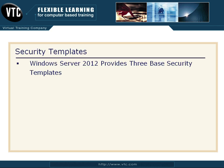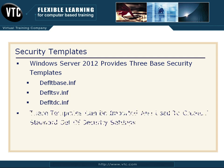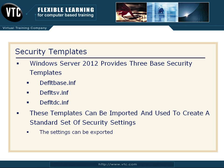Windows Server 2012 provides three base security templates: the DEFLT or default base .INF file, the default SV for server .INF file, and the default DC domain controller .INF file. These templates can be imported and used to create a standard set of security settings, which you can then export and import into all your other similar machines.